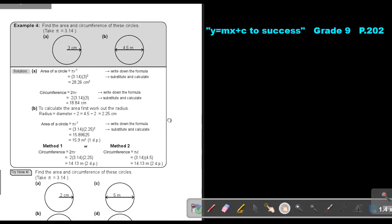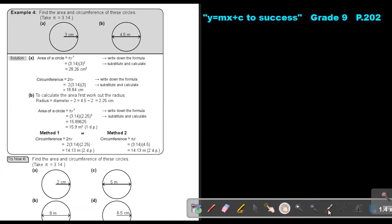Let's look at an example. Example 4: Find the area and the circumference of these circles. In this case, I give you the radius and in this case, I give you the diameter.